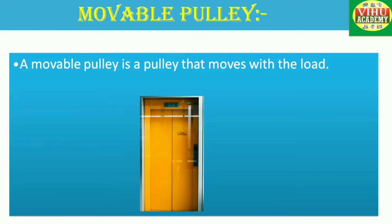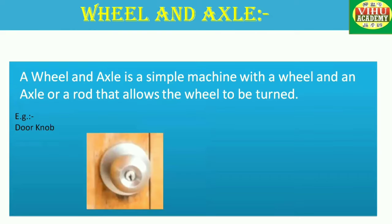What is a wheel and axle? A wheel and axle is a simple machine with a wheel and an axle or rod that allows the wheel to be turned. Examples of wheel and axle include bicycles, electric fans, revolving doors, doorknob and merry-go-round. Wheel and axle is also used for drawing water from the well.